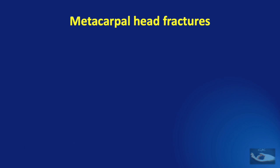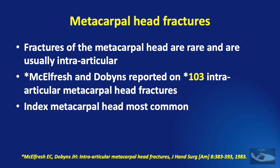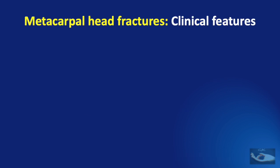Though metacarpal head fractures are rare, they are peculiar in that they are usually intra-articular fractures. A study done in 1983 reported on 103 intra-articular metacarpal head fractures and found that the index metacarpal head fracture was most common, presumably because it is a border digit and the carpometacarpal joint of the index finger is relatively immobile. The clinical features of metacarpal head fractures are similar to those of all metacarpals, discussed in a previous video.